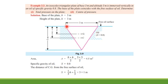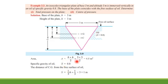First, we calculate the area of the isosceles triangle. Area = (b × h) / 2, where width b = 3 m and h = 3 m as given. So area = (3 × 3) / 2 = 4.5 m².